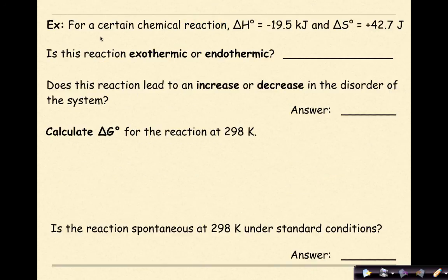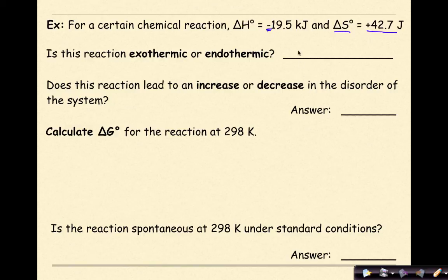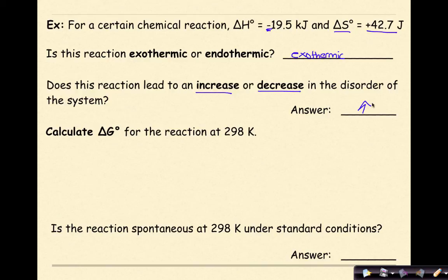Let's look at an example. For a certain chemical reaction, our change in enthalpy is negative 19.5 kilojoules, and our change in entropy is positive 42.7 joules. Is the reaction exothermic or endothermic? All we need to do is look at our delta H. We see that it is negative, therefore this is an exothermic reaction. Does this reaction lead to an increase or decrease in the disorder of the system? We know that if our delta S is positive, that is going to lead to an increase in the disorder of the system.